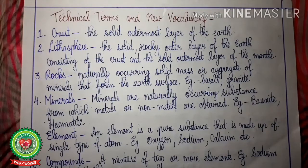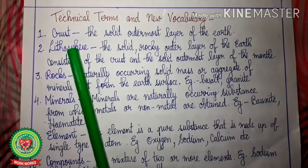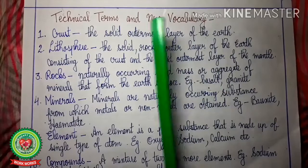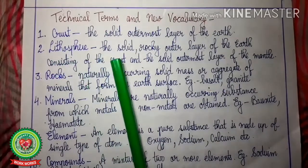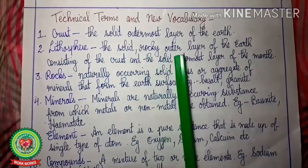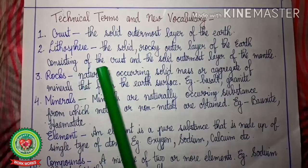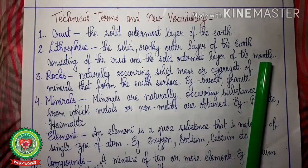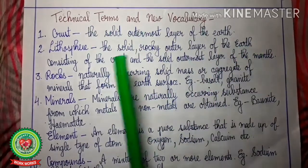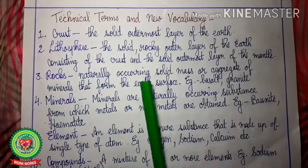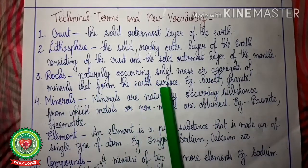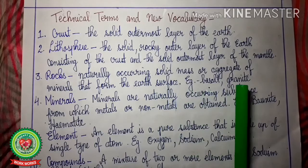Now let us discuss the technical terms coming in today's topic. 1. Crust — the solid outermost layer of the earth is called crust. 2. Lithosphere — the solid rocky outer layer of the earth consisting of the crust and the solid outermost layer of the mantle. Mantle is the second layer of the earth below the crust. 3. Rocks — naturally occurring solid mass or aggregate of minerals that form the earth's surface. Examples: Basalt, Granite.